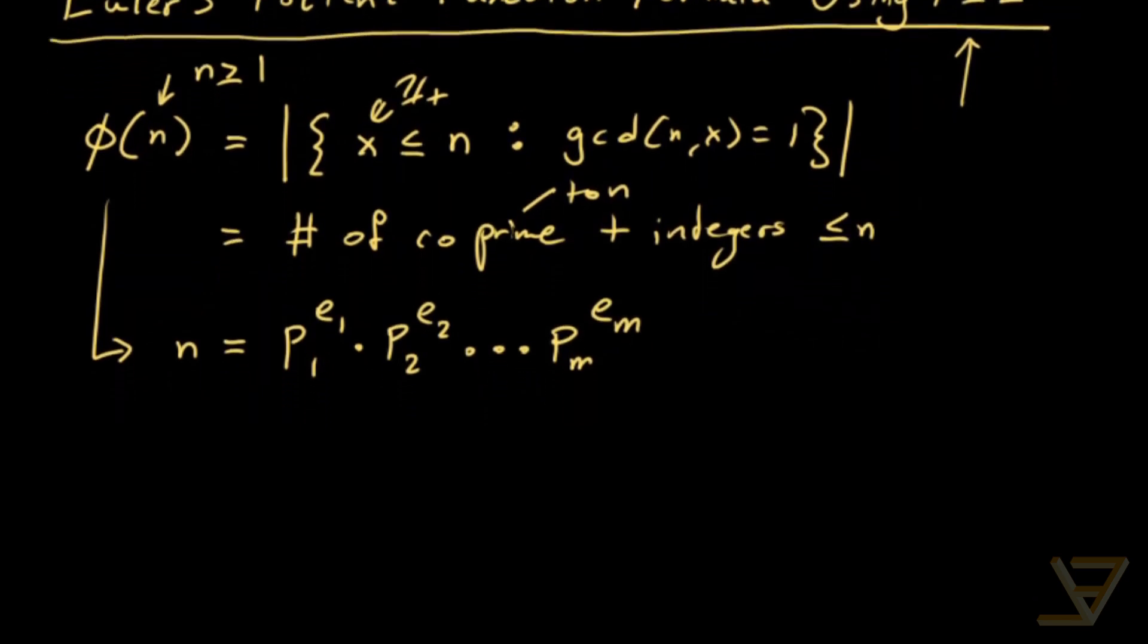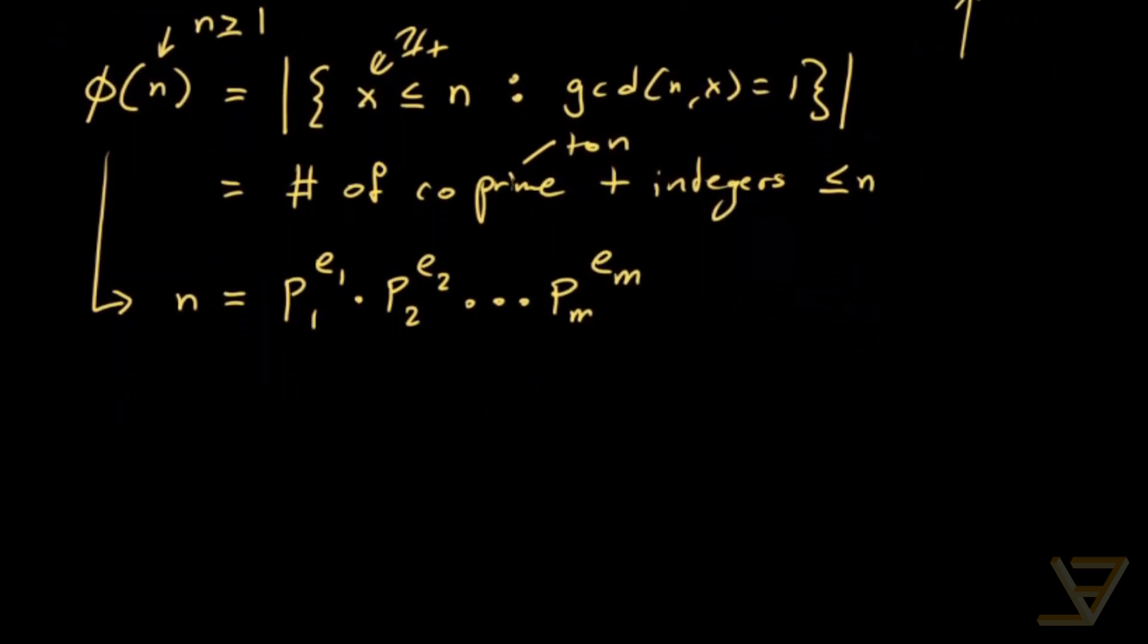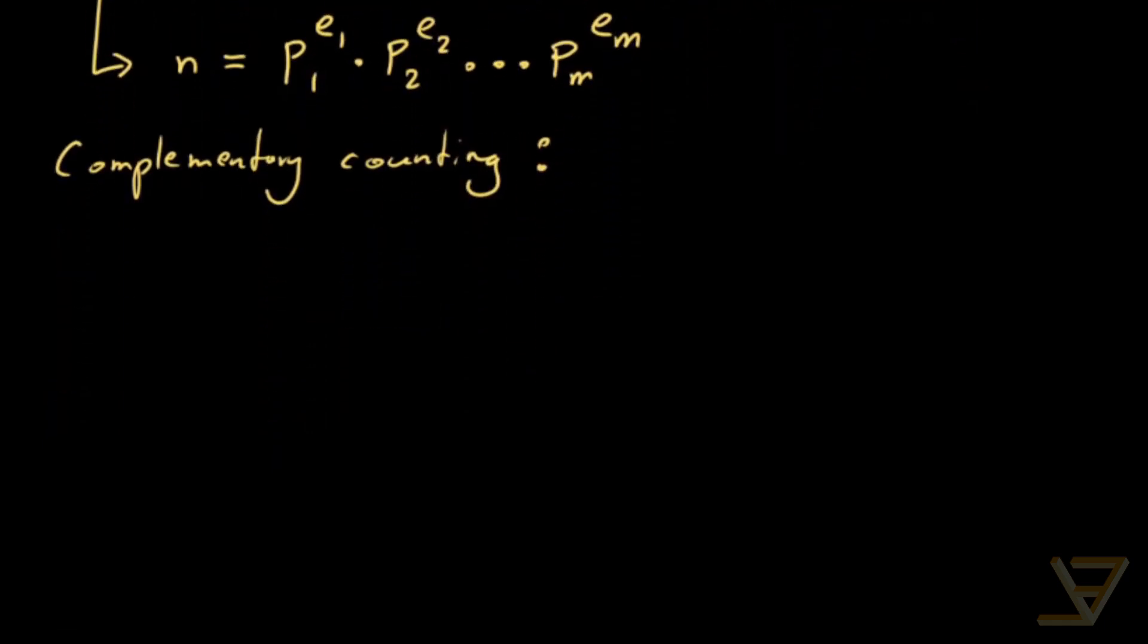And what we're going to do is use complementary counting. We'll use the principle of inclusion-exclusion in a moment, but first we need complementary counting. So recall that phi of n is equal to the cardinality of the set of positive integers x less than or equal to n such that GCD of n and x is equal to 1.